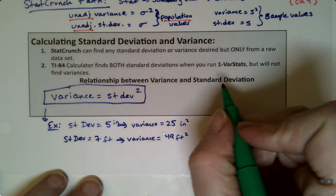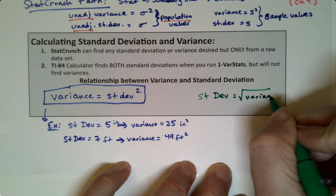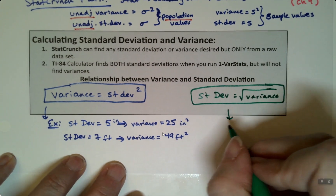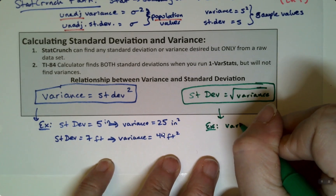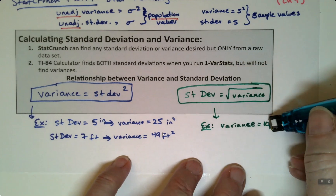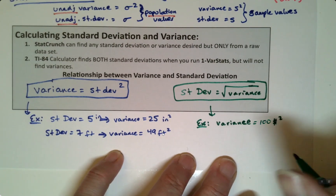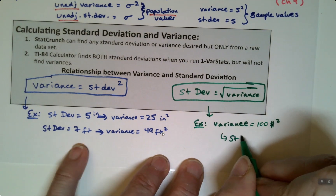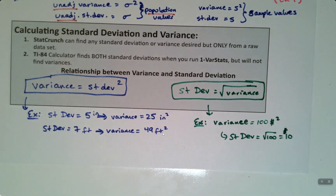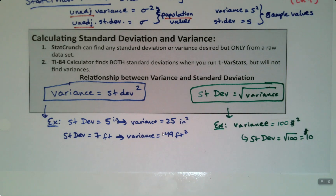Similarly, the standard deviation is the square root of the variance — and this comes up in at least one of your worksheets. For example, if the variance is 100 dollars squared, then the standard deviation is the square root of 100, which is 10 dollars. That's how variance and standard deviation relate to each other.